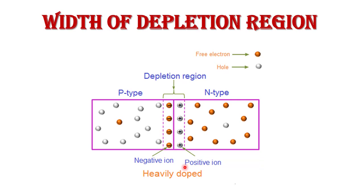Now, the width of the depletion region. Practically, the width of the depletion region is very small — in the order of 0.5 to 1 micron, where 1 micron equals 1×10⁻⁶ meters. Thus the depletion region is very thin compared to the width of the p-type or n-type region. However, if we apply any external voltage, the depletion region increases or decreases depending on how much voltage we apply.